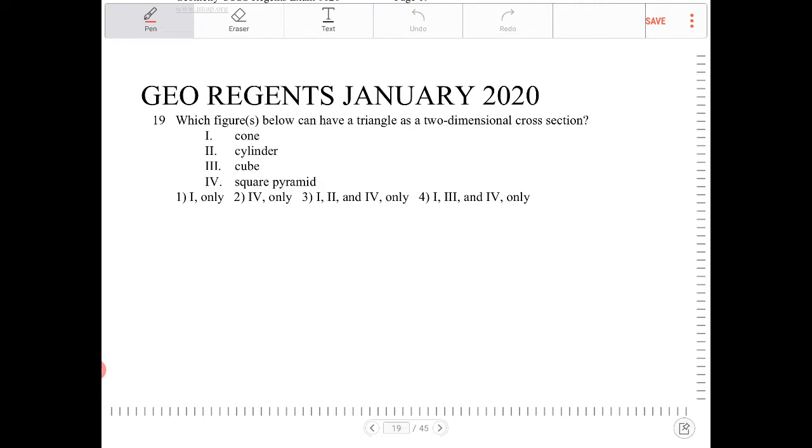Okay, so a cone looks like this. And if we were to draw a cross-section, what we'll end up with is something that looks like this.